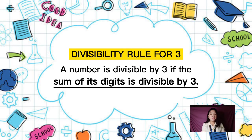A number is divisible by 3 if the sum of its digits is divisible by 3. Remember, when we say sum, it means addition.